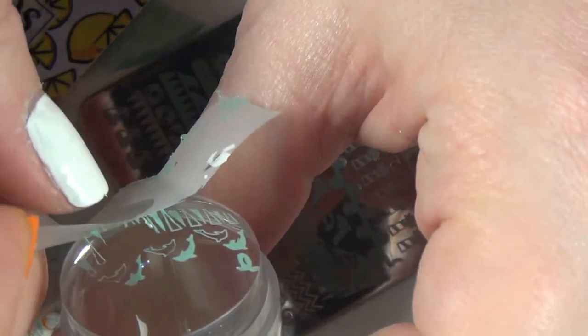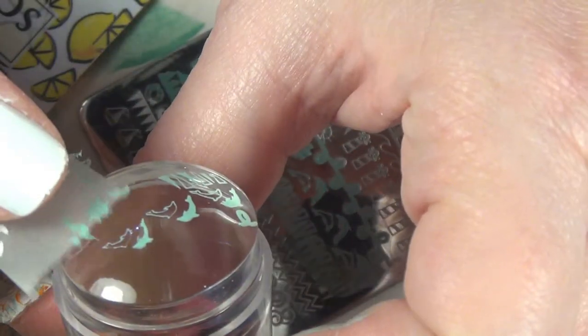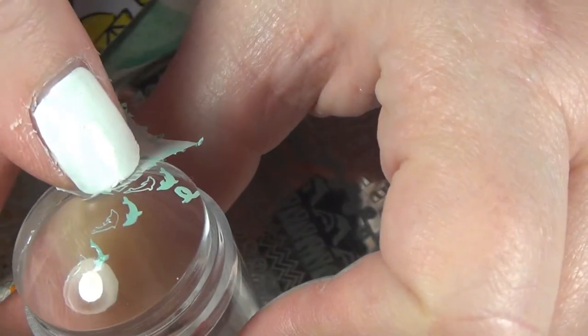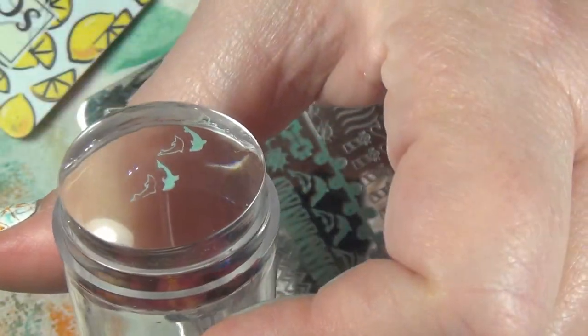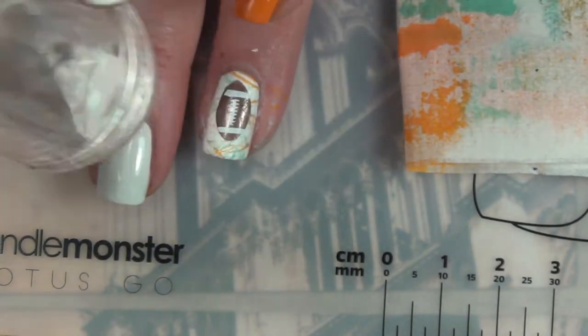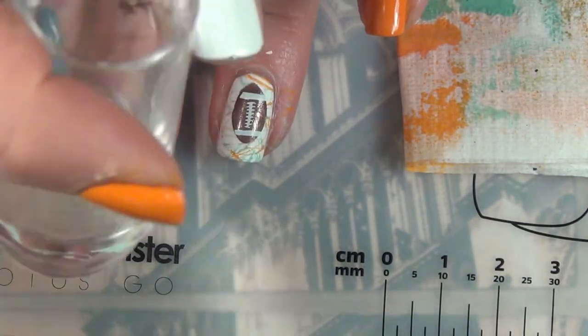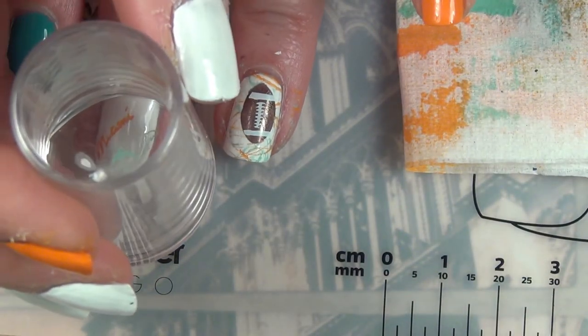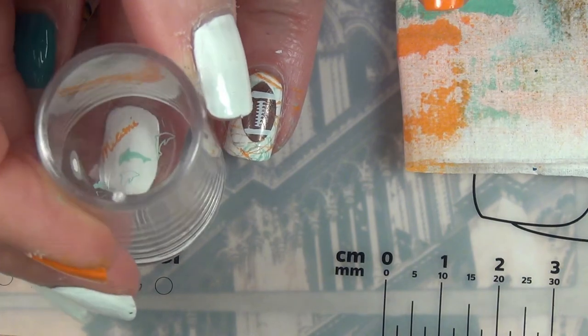I was being very careful because those dolphin are very fine lines and I was really concerned that I was going to lift them up accidentally. I'm going to stamp those kind of at an angle underneath the word Miami which I did stamp at an angle on purpose.